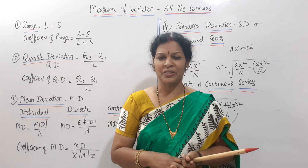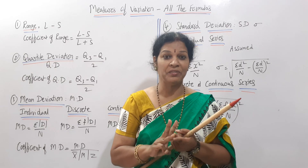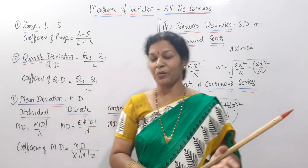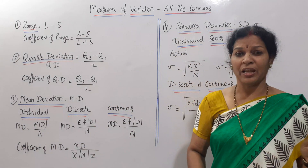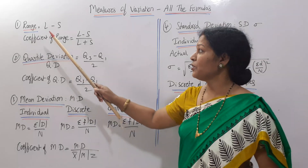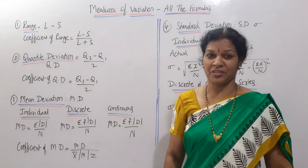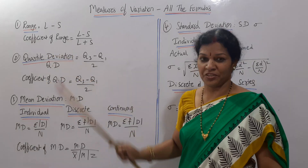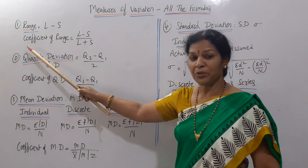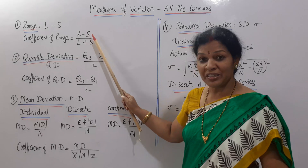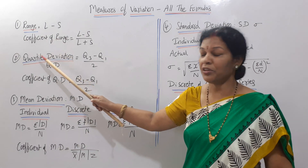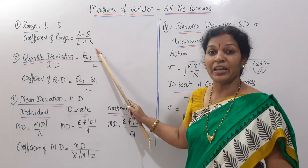In measures of variation, we have learned four items: range, quartile deviation, mean deviation, and standard deviation. I will explain all the formulas at a glance. Range means largest value minus smallest value — the formula is L minus S. Coefficient of range is L minus S by L plus S, which is useful to compare one variable with another.